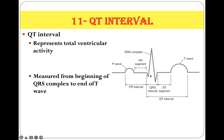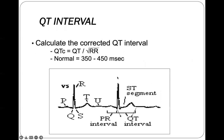The QT interval includes the QRS interval, ST segment, plus T-wave duration — representing the total ventricular activity. The abnormalities in the QT interval include either prolongation, causing a prolonged QT interval, or shortening, causing a short QT interval.